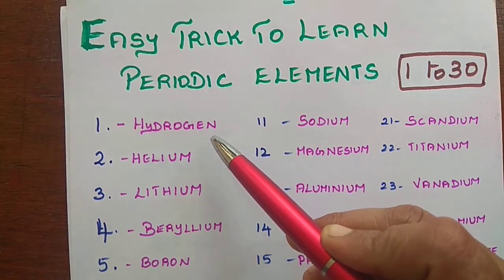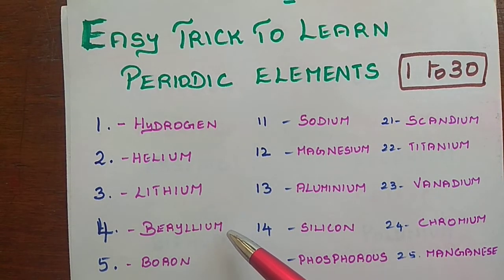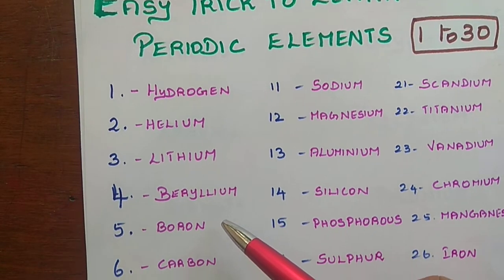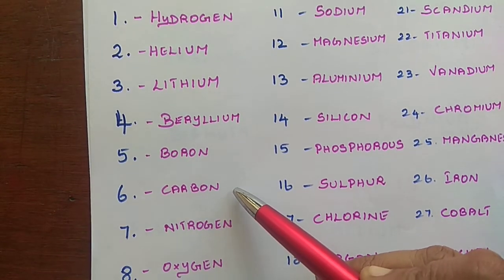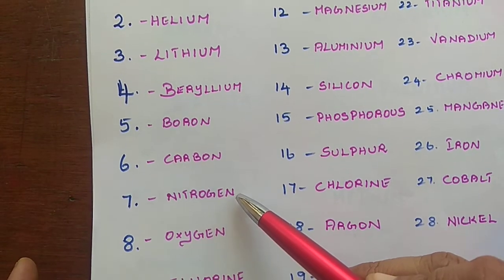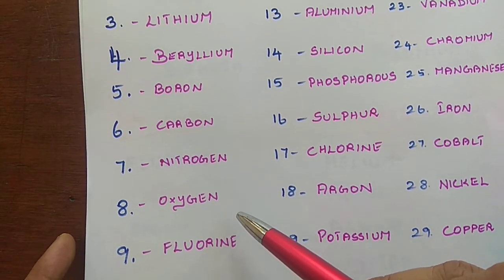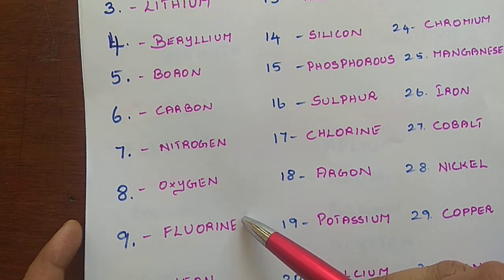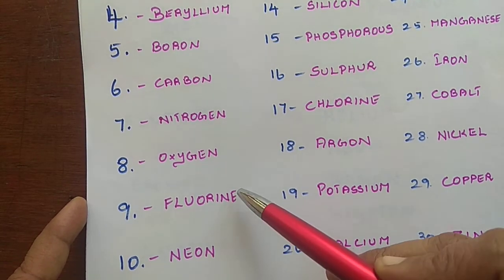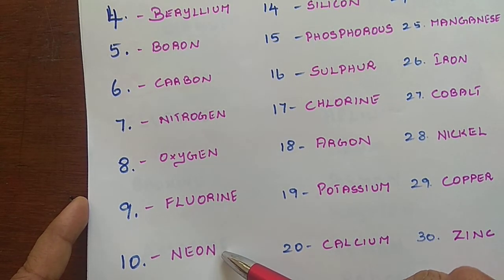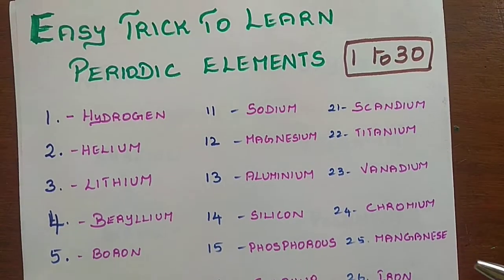Hydrogen, Helium, Lithium, Beryllium, Boron, Carbon, Nitrogen, Oxygen, Fluorine, Neon. These are the first 10 elements.